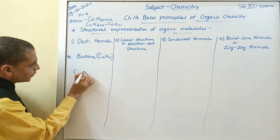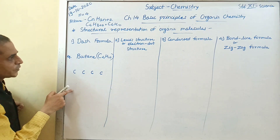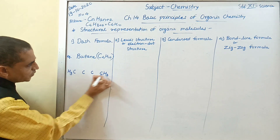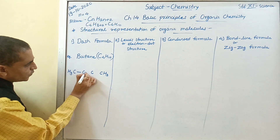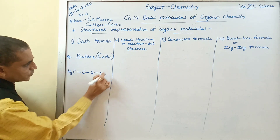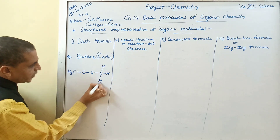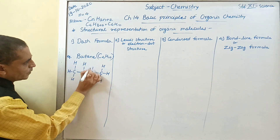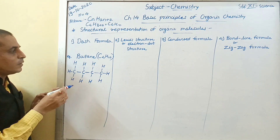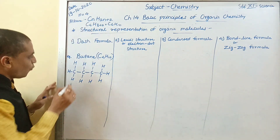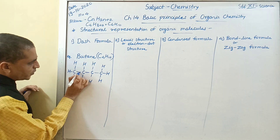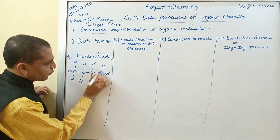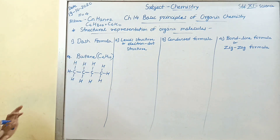Now to write the dash formula, first we write 4 carbon atoms: 1, 2, 3, 4. The end atoms are called terminal carbon atoms, and the 2 middle CH2 groups are the internal carbon atoms. These are connected by dashes. Always remember the tetravalency of carbon — tetravalency means carbon has a valency of 4. For the first carbon: 1, 2, 3, 4; for the second: 1, 2, 3, 4 — and so on. This is the dash formula of butane.